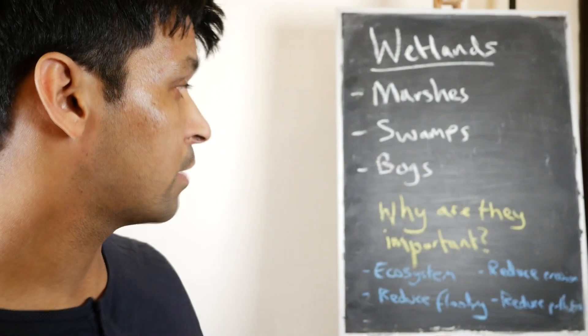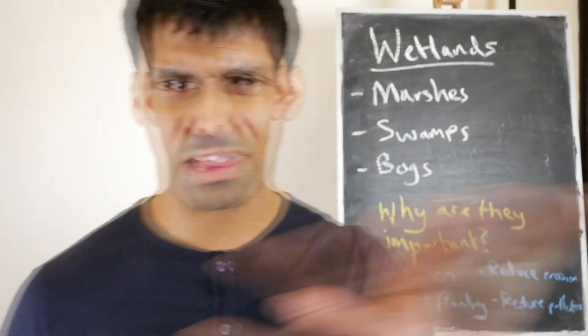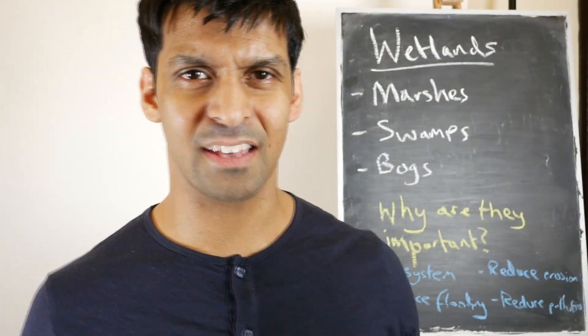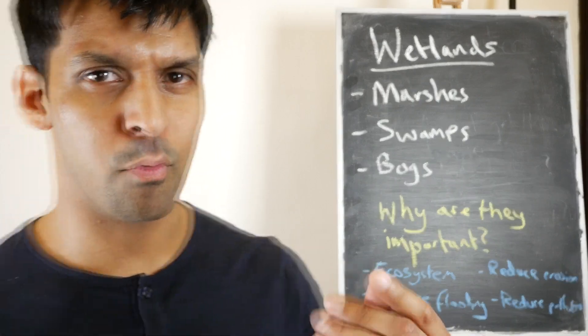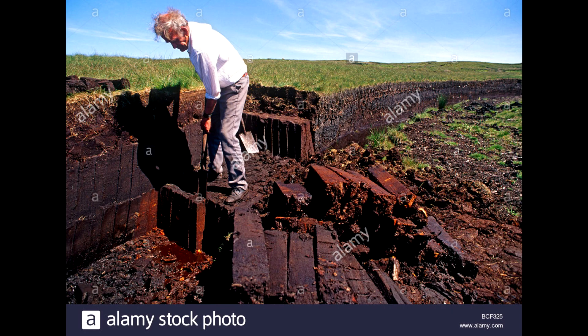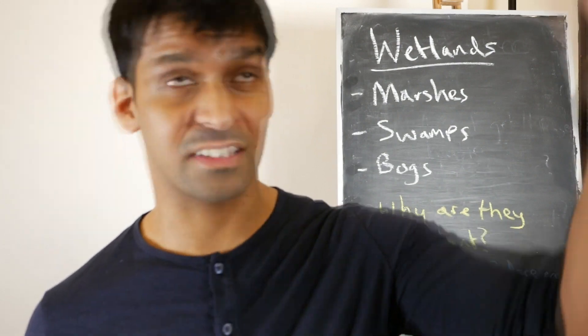It took thousands of years to form a bog. Eventually there was no lake — it was just a load of peat, which is this acidic brown material. This peat is actually very important because people use it as a fuel source, burning it like oil or coal. It's very energy rich and also a carbon sink, meaning it takes carbon from the air and removes it completely, making it very important for the atmosphere.